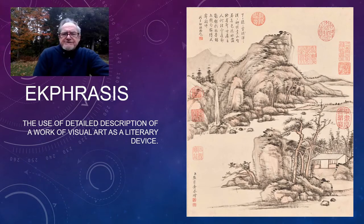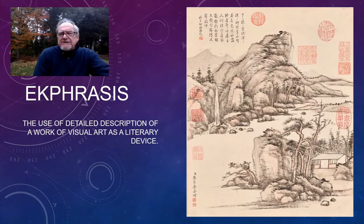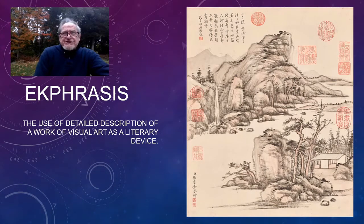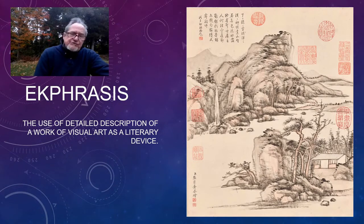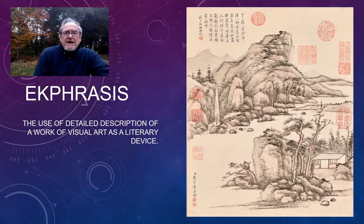This is an ancient Chinese painting, just to give you a little background. The circular, square, and rectangular red stamps — those are the stamps of the names of the owners of the painting. So originally, the painting is created, and then the painter usually goes to a poet, and the poet writes a poem based on the picture.